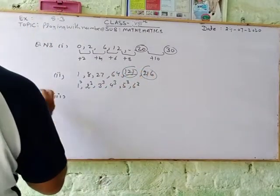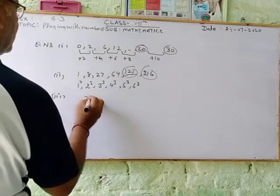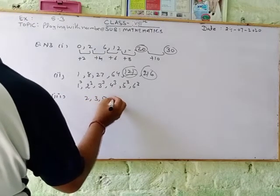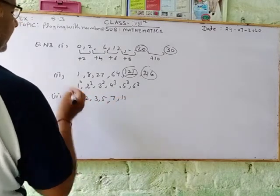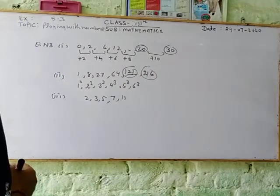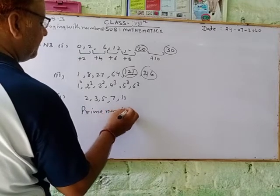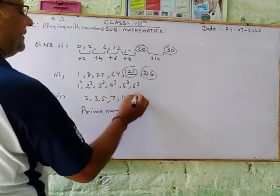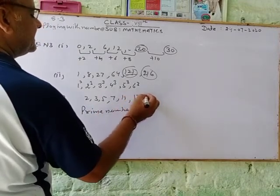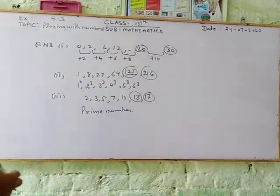And third part: 2, 3, 5, 7, 11. You look here, we write down the prime numbers. So prime numbers after 11, we get 13, and next is 17. These two are required answers.